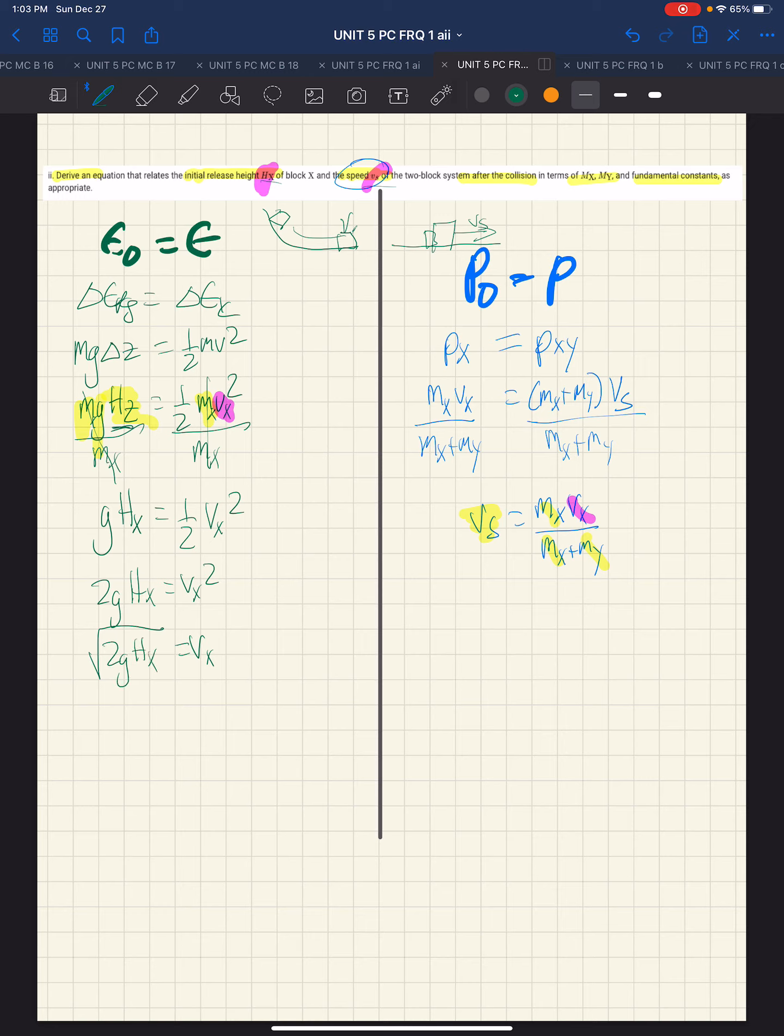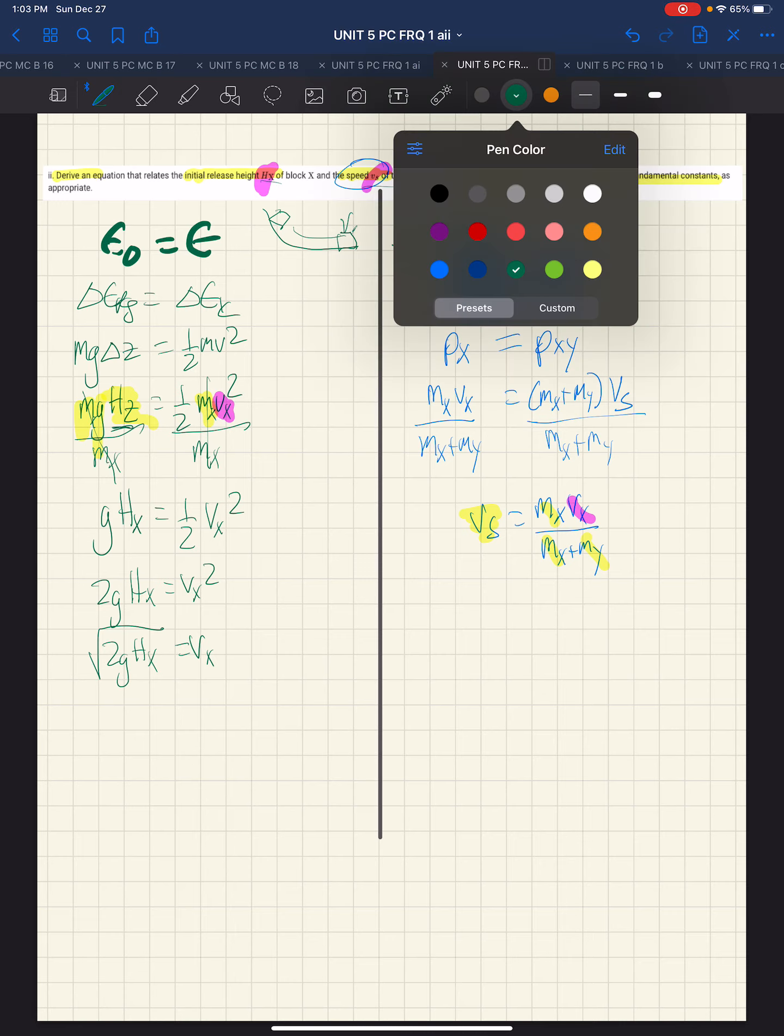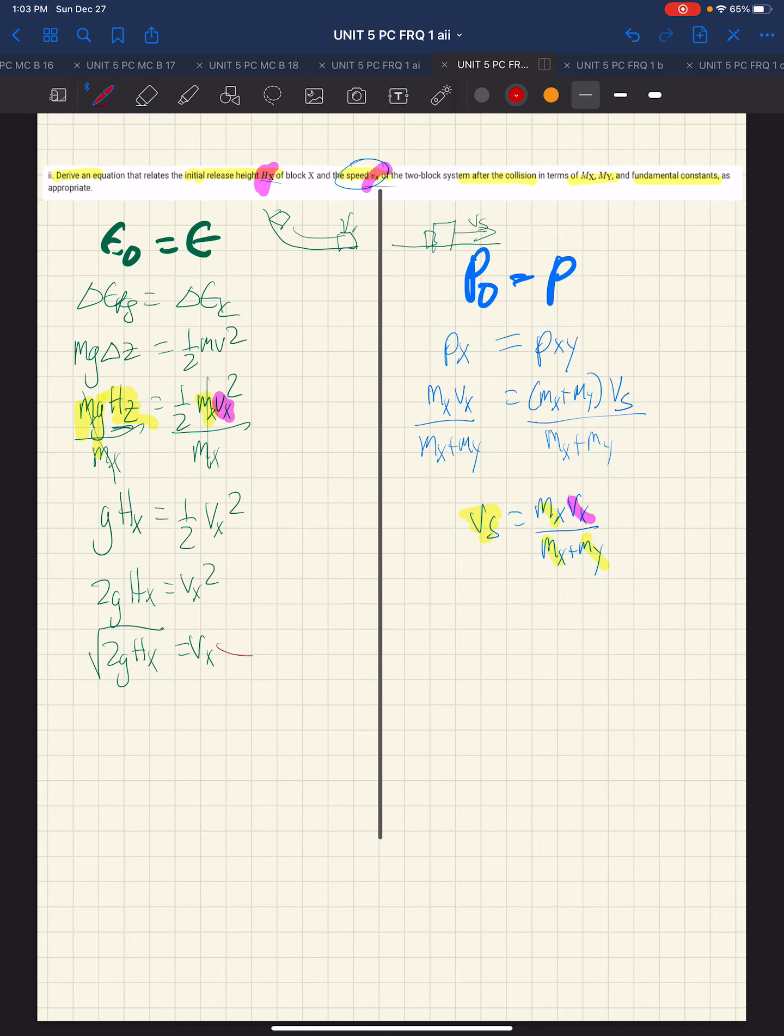Well, we can bring that over to the other side, bring this vx over and substitute it there. That then gives us vs is mx times the square root of 2g hx all over mx plus my.